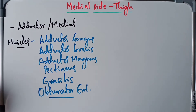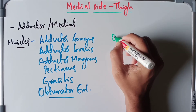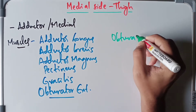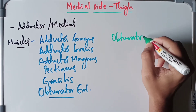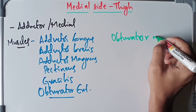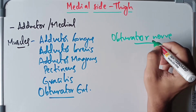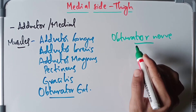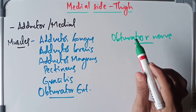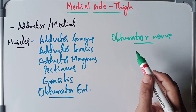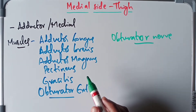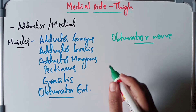When it comes to the nerve, we have one nerve known as the obturator nerve. The obturator nerve is a part of the lumbar plexus arising from the branches of L2, L3, and L4 roots, and it supplies the medial side of the thigh.